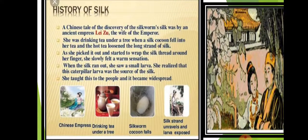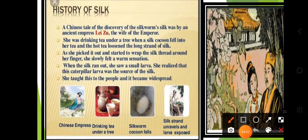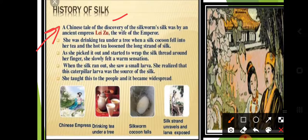Now let us understand the history of silk — how we can obtain silk from silk worms. There is a beautiful story based in China. According to a Chinese tale, the discovery of silk was by an ancient empress named Li Zu.